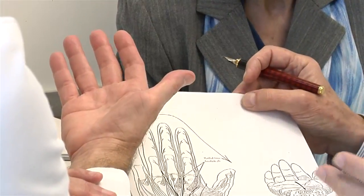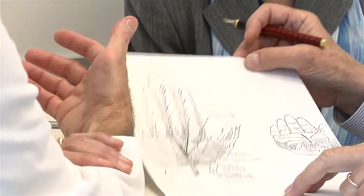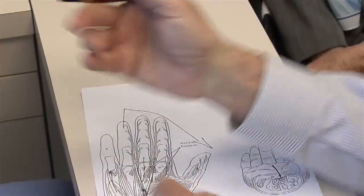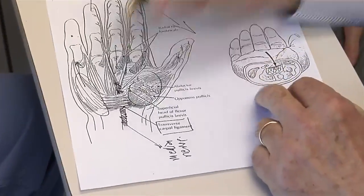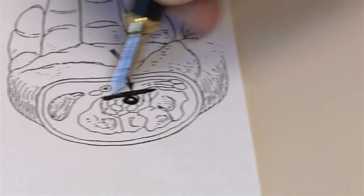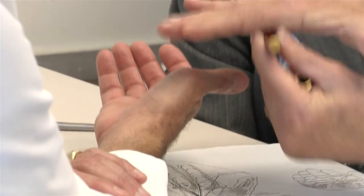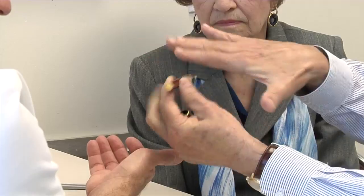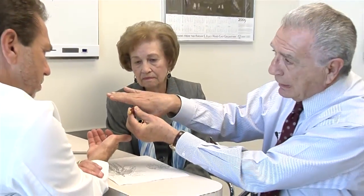People get numbness and tingling, particularly at night, awakened from a sound sleep. If you look at this and cut across to see the end-on view, the rod will look like a dot that you cut across, and the membrane will look like a line. If I have the nerve going under my hand and you look at the end-on section, the nerve will look like a dot, and the membrane — the carpal tunnel membrane — will look like a line.